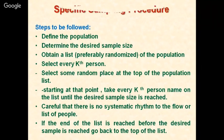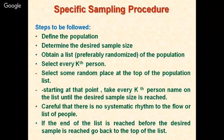Steps for systematic random sampling: define the population, determine the desired sample size, obtain a list of the population, select a random starting place at the top of the population list, start at that point, and take every kth person's name on the list until the desired sample size is reached. Be careful that there is no systematic rhythm to the flow of the list of people. If the end of the list is reached before the desired sample size is reached, go back to the top of the list.